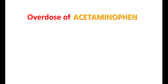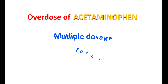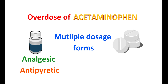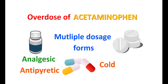One of the main reasons for overdose is that acetaminophen is available in multiple dosage forms. It is used as an analgesic as well as an antipyretic, and it can be combined with medications intended for treating cold. Therefore, patients may take two medications intended for two different purposes that both contain acetaminophen, leading to intake of an increased dose per day and resulting in liver toxicity.